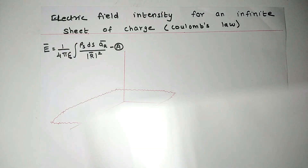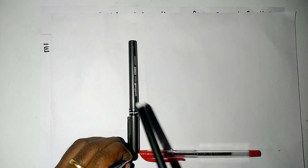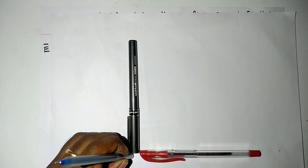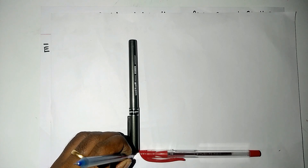Let us have a sheet of paper like this, and we have three mutually perpendicular axes. This red pen represents your x-axis, this black pen your y-axis, and this blue pen is your z-axis — and this is the infinite sheet. Our objective is to find out the electric field intensity at this point, that is at the tip of the pen.